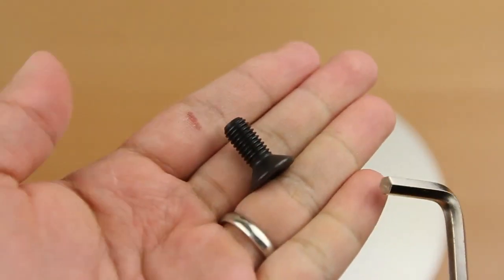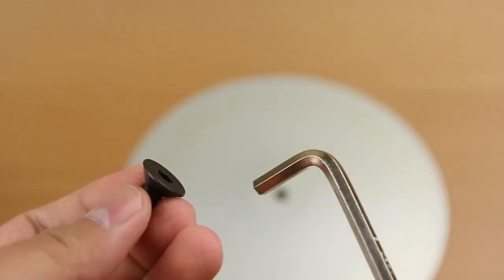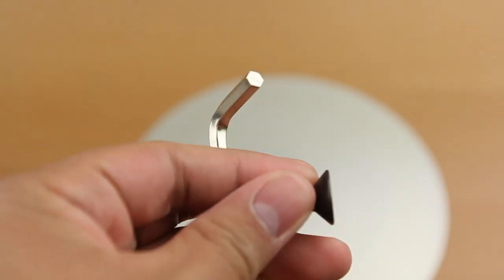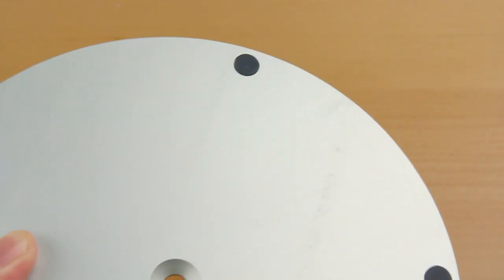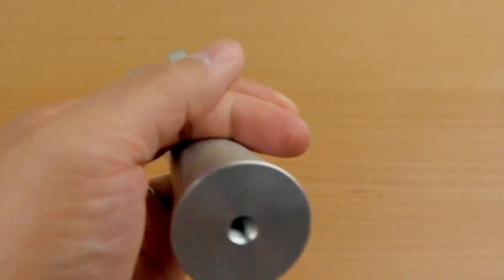Then you'll take the hex key that's included and the bolt that they give you as well to screw the base of the stand to the post of the stand where this will serve as the foundation for your actual cradle.